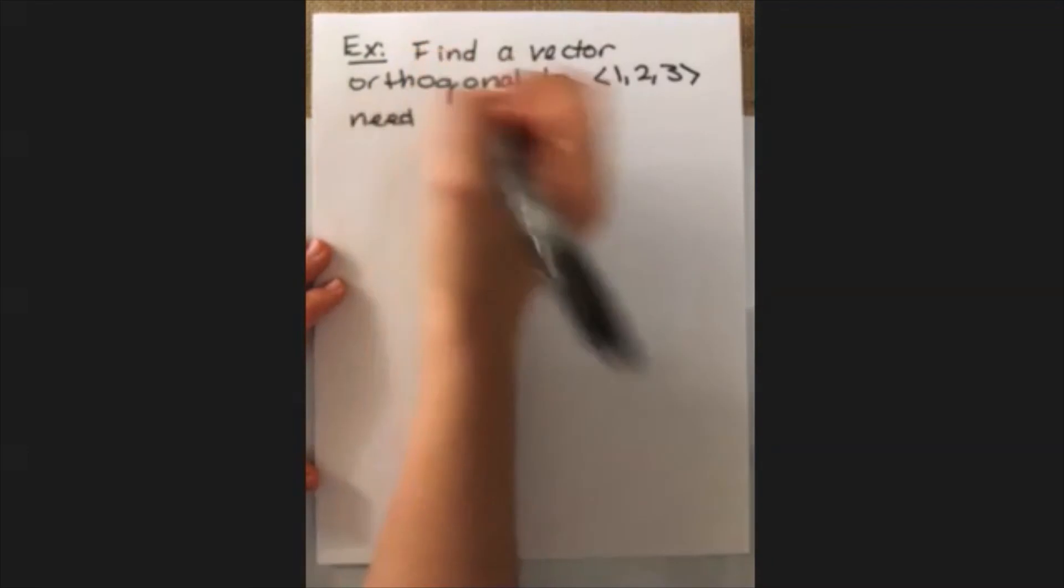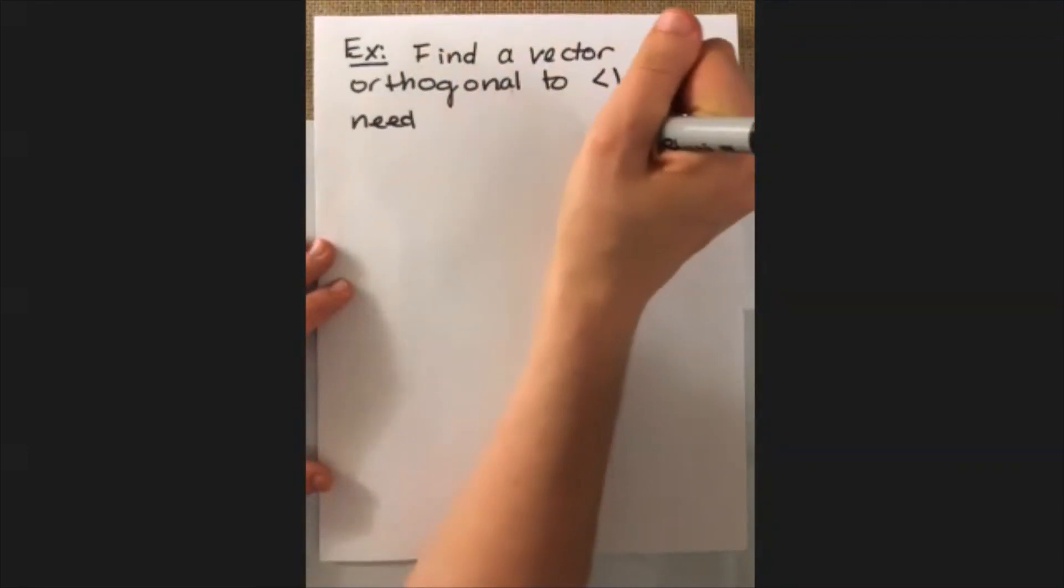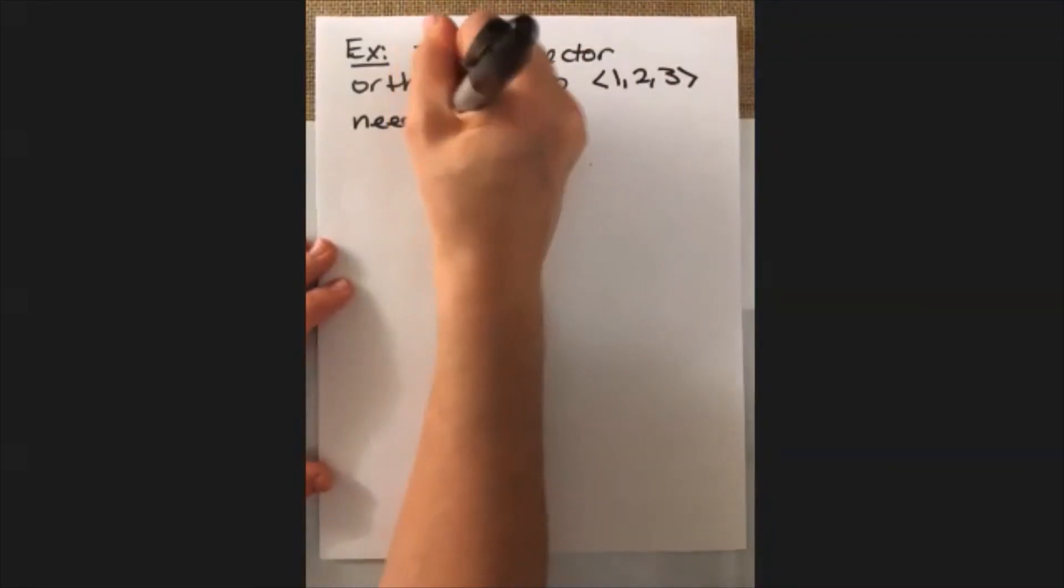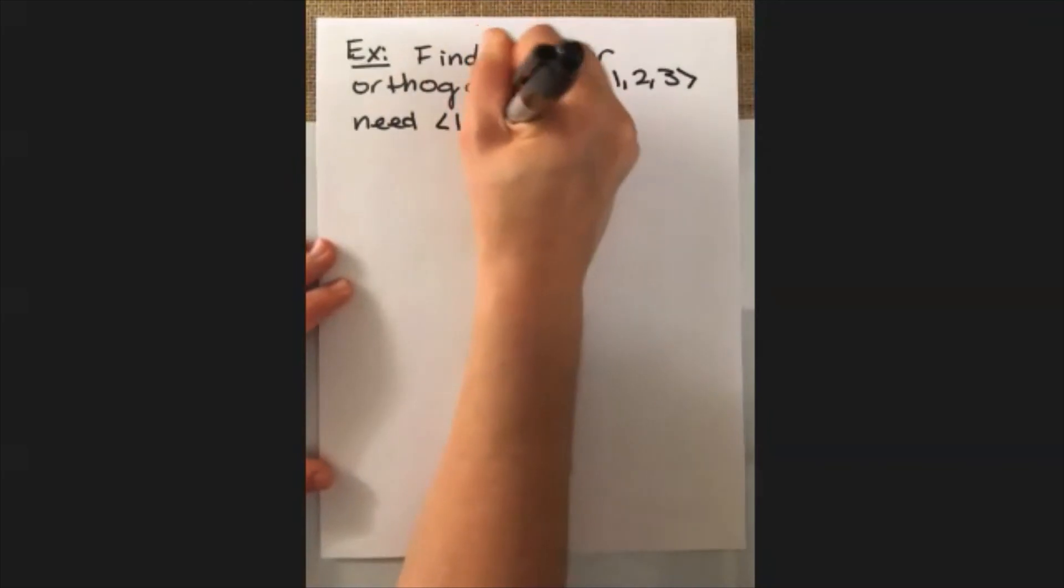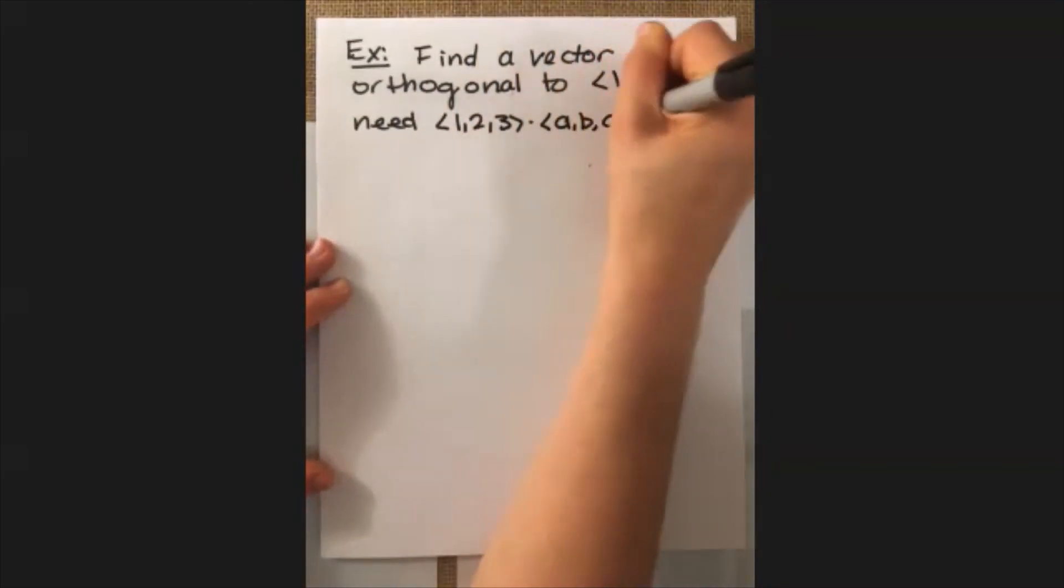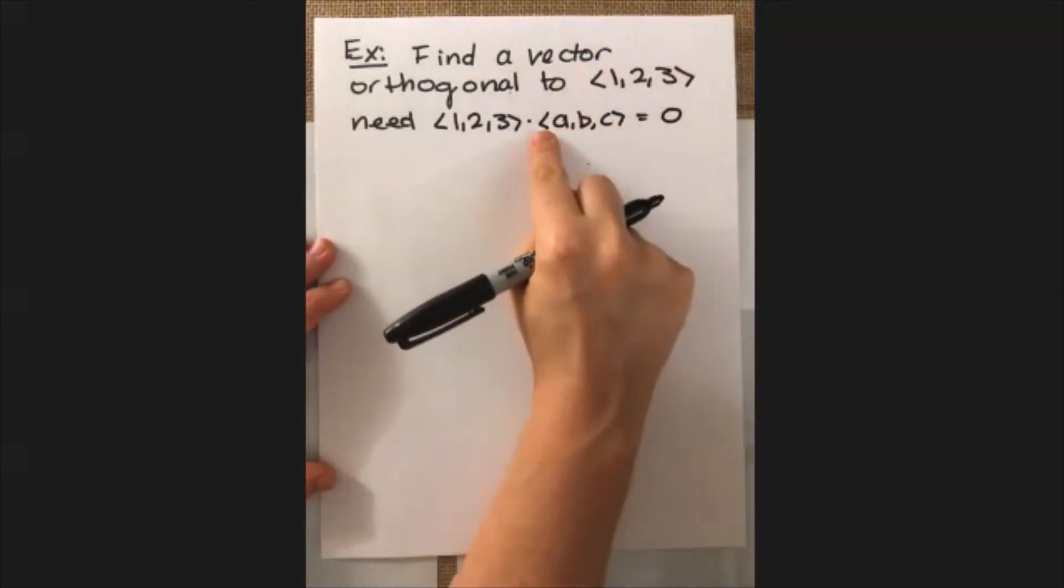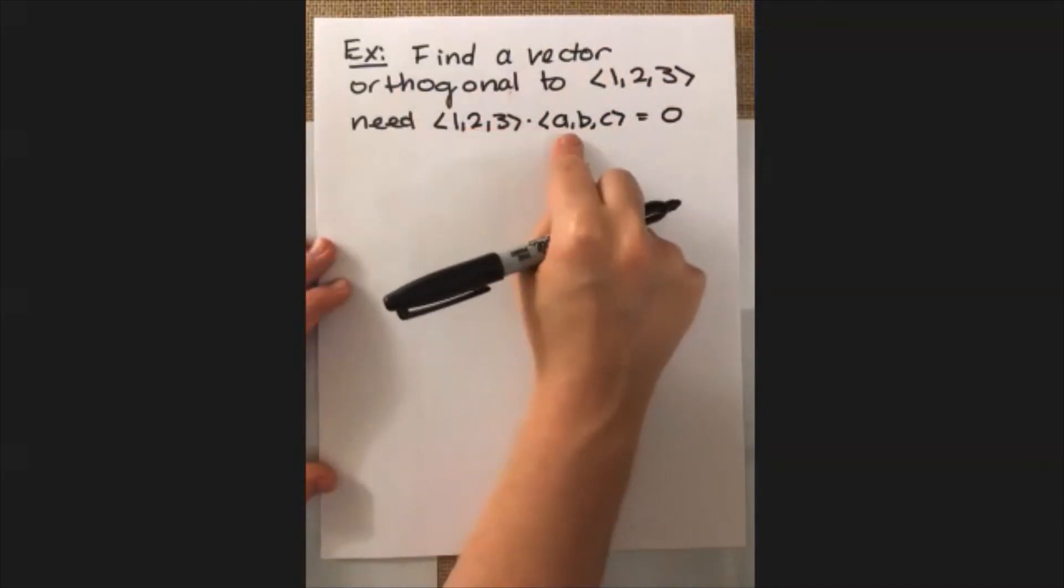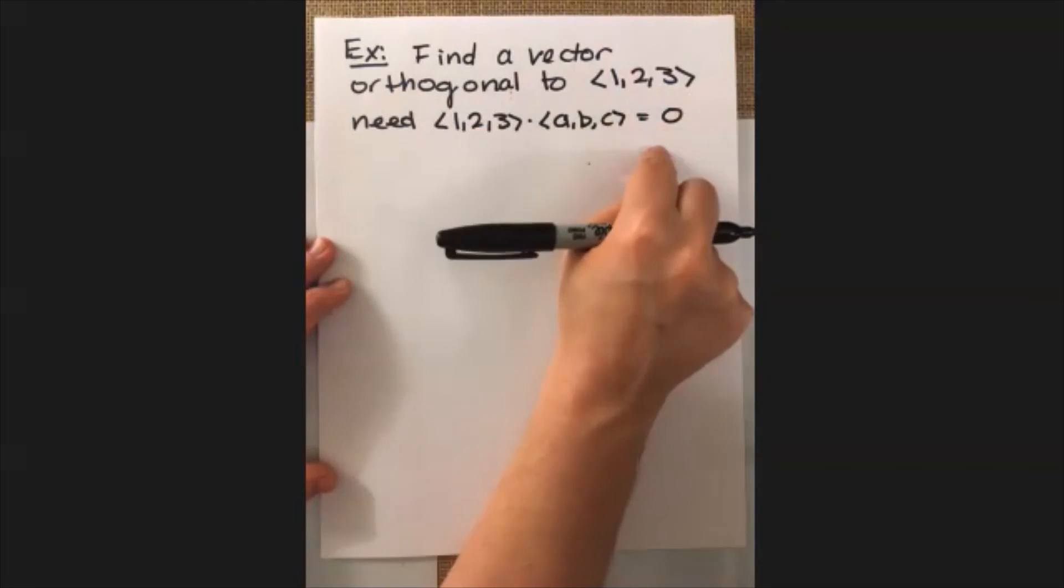So we can find any vector whatsoever that gives us orthogonality here. And in trying to do that, we're going to rely on that property of the dot product that says, when we take the dot product of two orthogonal vectors, we're going to get zero back. So we want to just try to find any vector such that when we take the dot product with <1, 2, 3>, we're going to get zero.